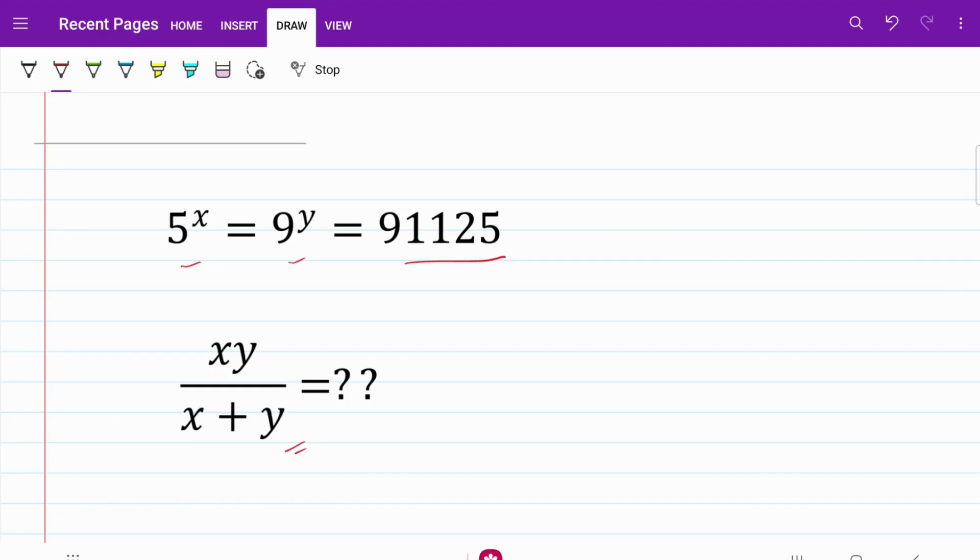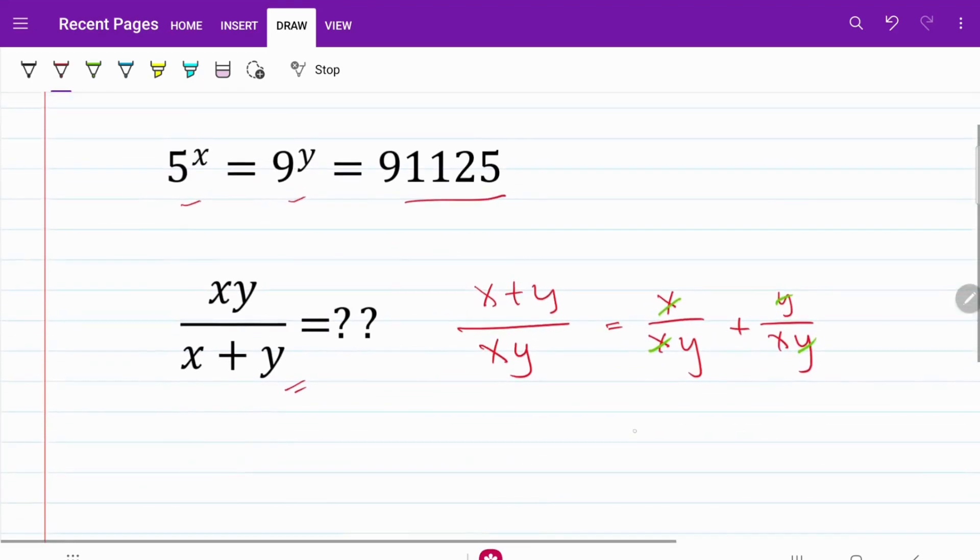So what I now have is x plus y over xy. When I separate out the fraction, I can actually turn this into x over xy plus y over xy. From there, if I do a cancellation, I now have 1 over y plus 1 over x.